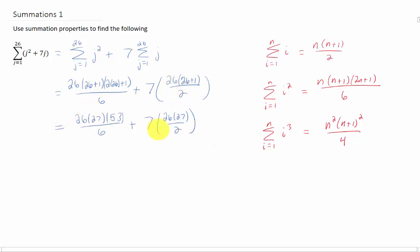I just simplified all of the numerators here. Now, I'm going to whip out a calculator. This first sum turns into 6201, and the second sum turns into 2457, which adds up to 8658. Okay, that does it for that one.